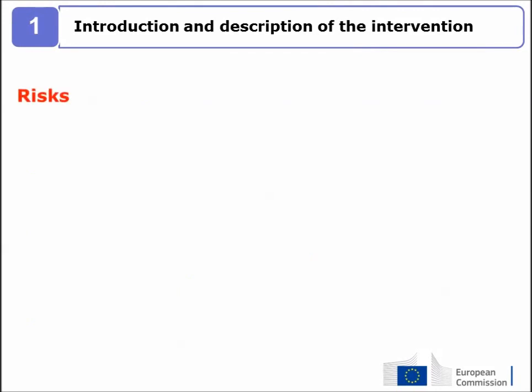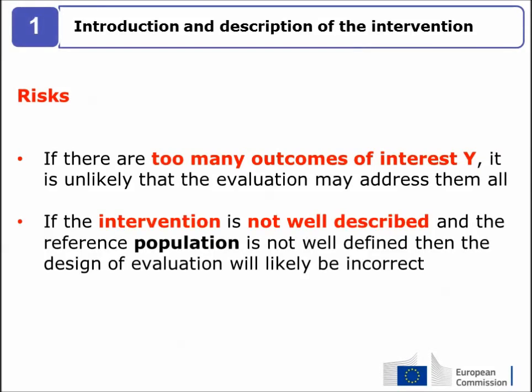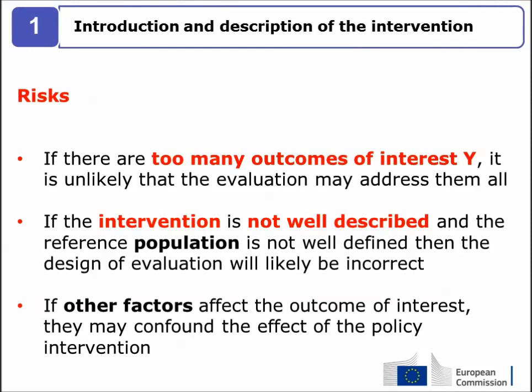An introduction that is too vague, too long, or too ambiguous may confuse the evaluators. Specifically, if there are too many outcomes of interest, it is unlikely the evaluation can address them all. Similarly, if the intervention is not well described and the reference population is not well defined, the design of the evaluation will likely be incorrect. And if other factors affect the outcome of interest, they may confound the effect of the policy intervention.